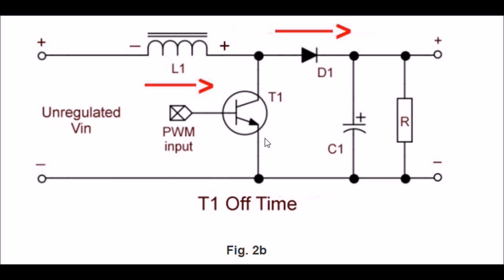Now I've turned off T1, and the magnetic field that was generated in L1 when it was turned on collapses. This induces a voltage of the opposite polarity. You notice the polarity now on L1 has reversed. But you notice that I'm going from plus, minus, to plus. The induced voltage in L1 adds to the input voltage, and through D1 is used to charge the capacitor C1. This is why we call it a buck-boost. The output voltage is higher now than the input voltage.